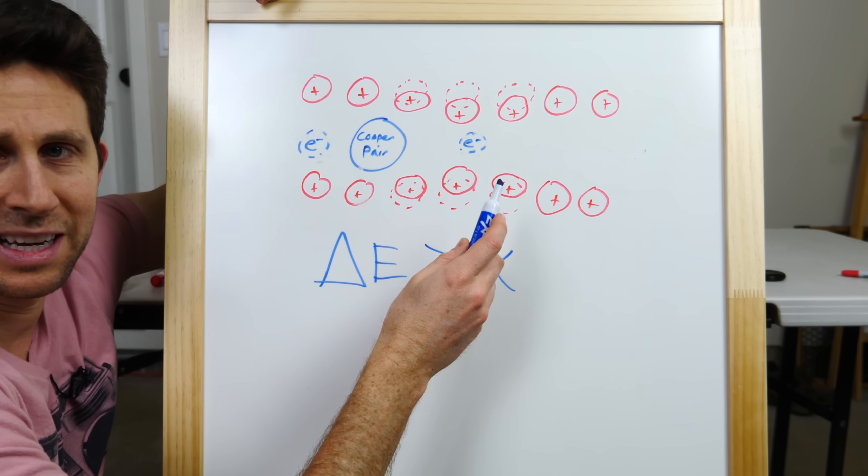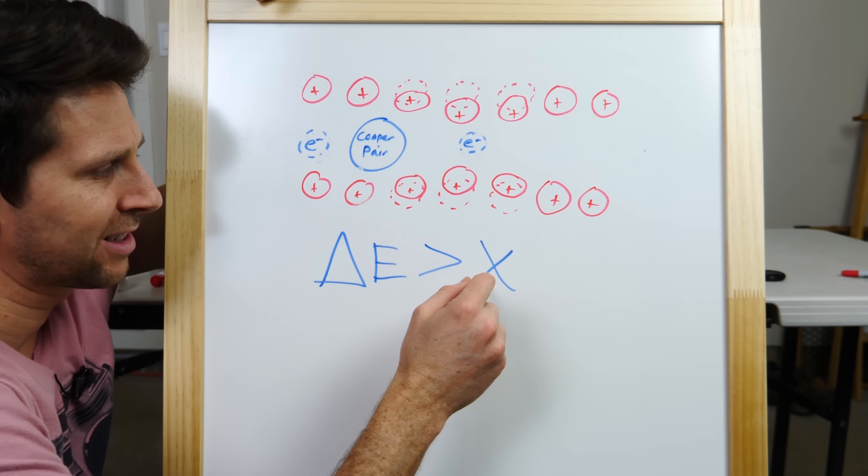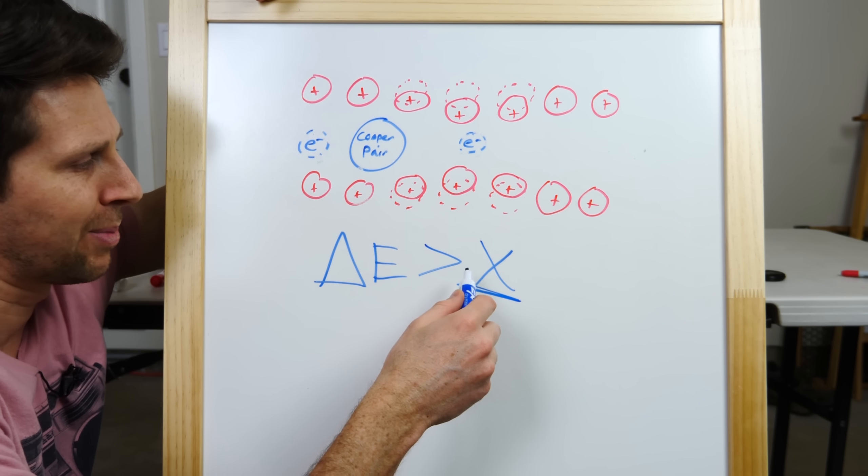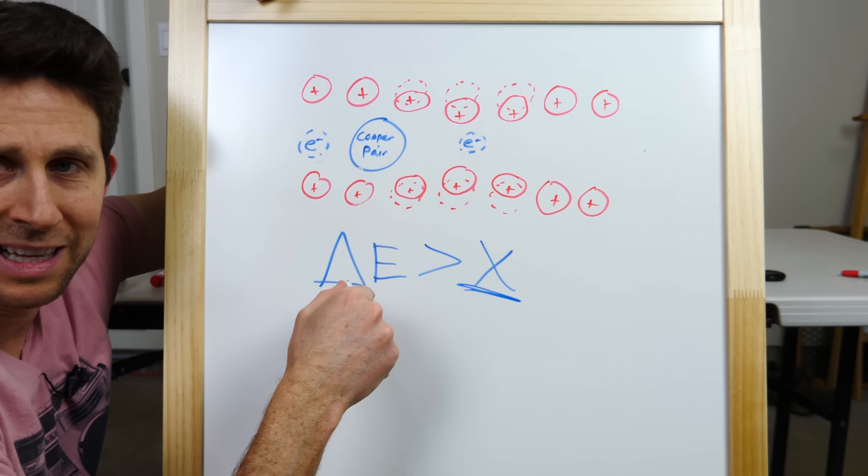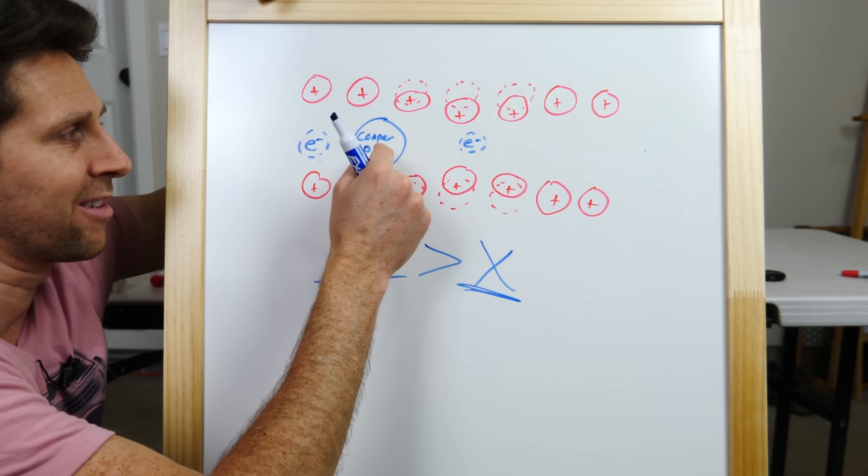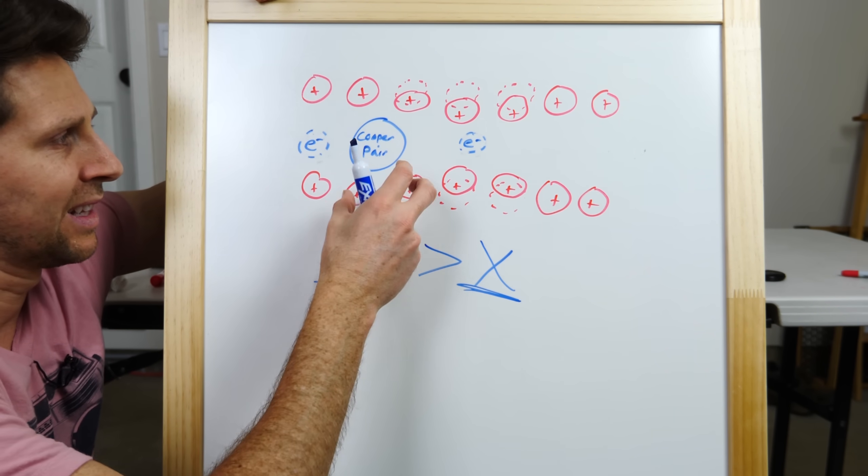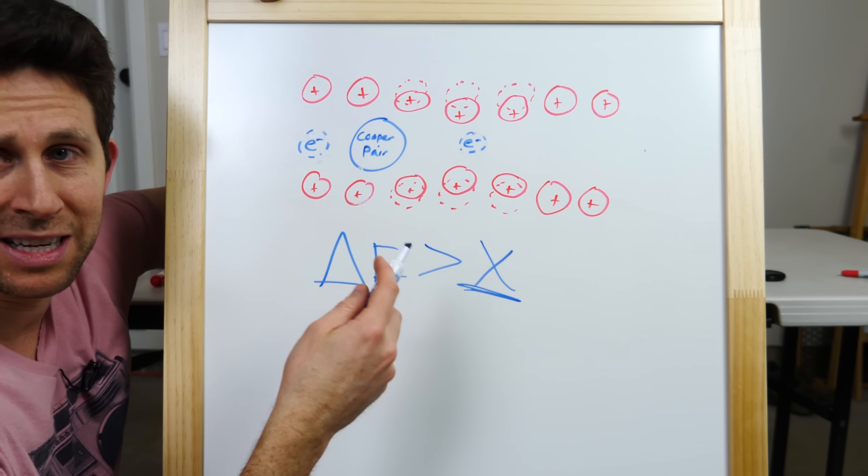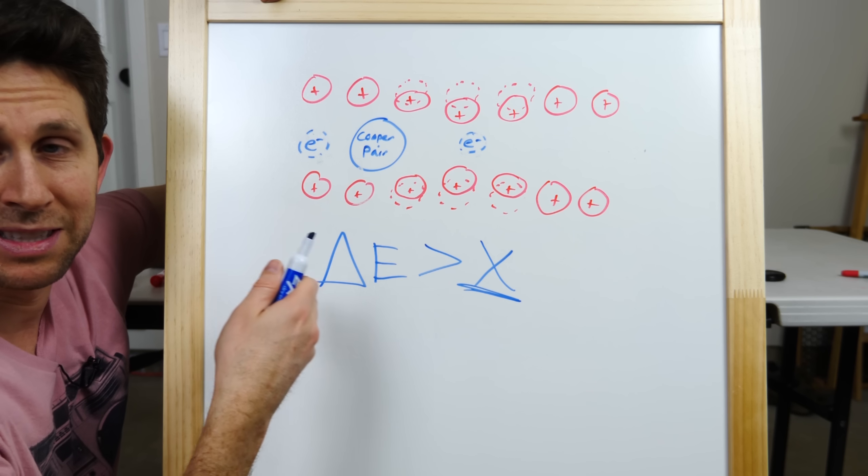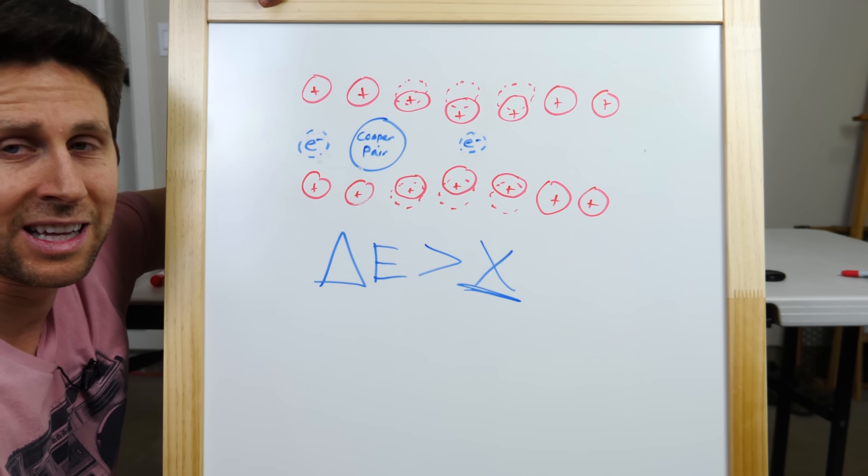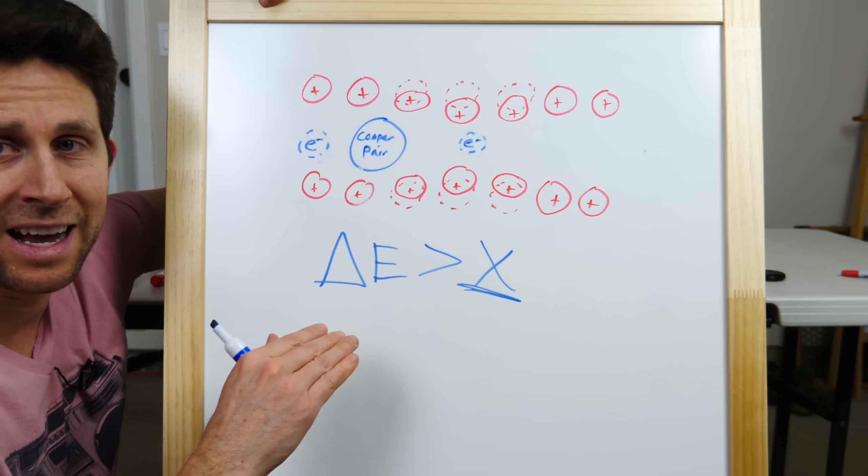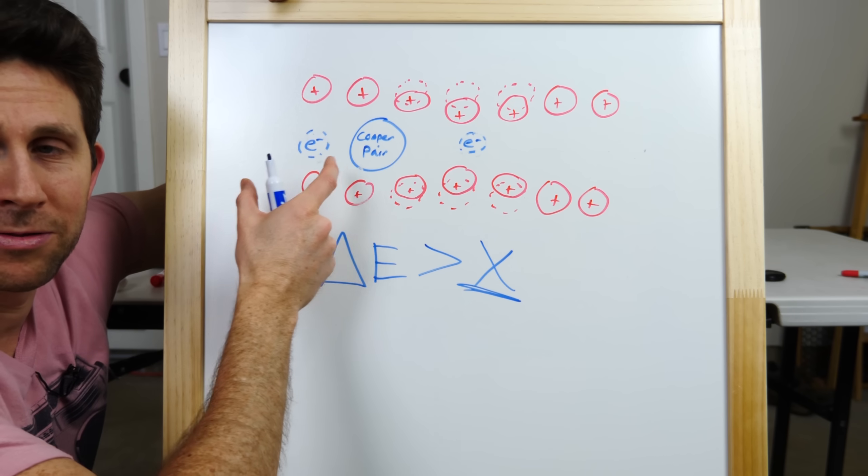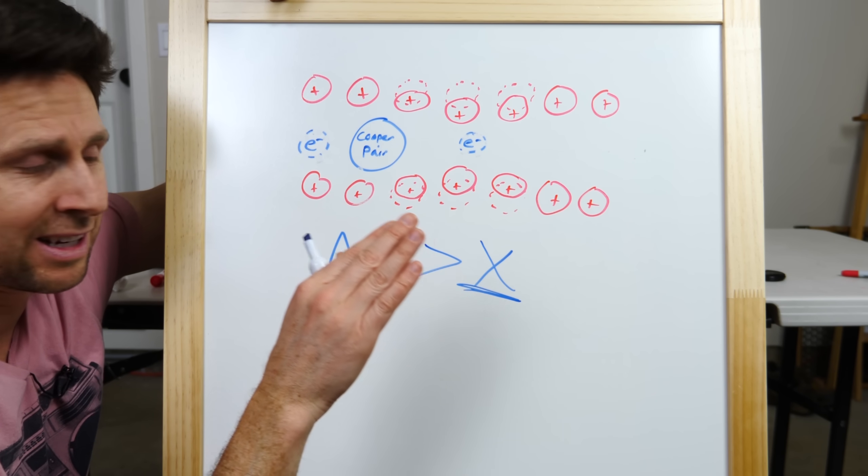But what's interesting is if you cool it down colder and colder, eventually this value here of each individual atom becomes so low that it's less than the minimum energy needed to scatter this Cooper pair. Meaning that basically anything it bumps into doesn't have enough energy to do anything to it. So, it doesn't affect it at all. It's not like it affects it a little bit. It can't affect it at all. And so, this Cooper pair can now move through the lattice unaffected in any way.